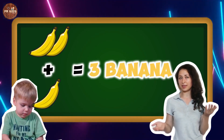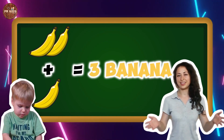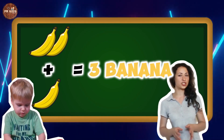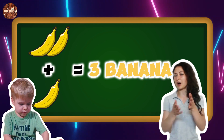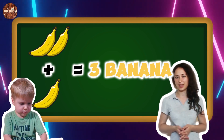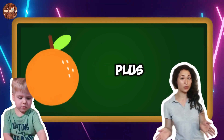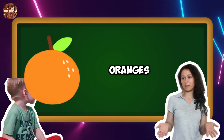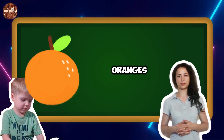Two bananas plus one banana makes three bananas. One, two, three — three bananas. Three oranges plus two oranges makes five oranges. Five oranges.